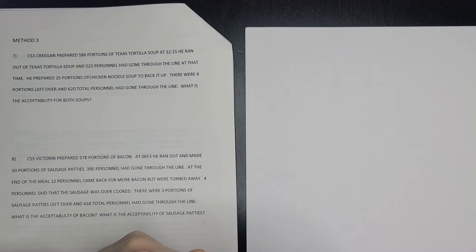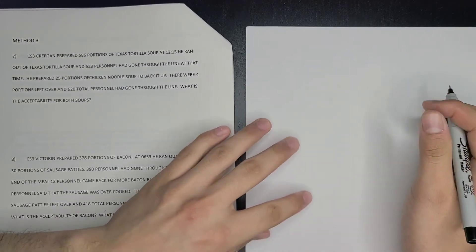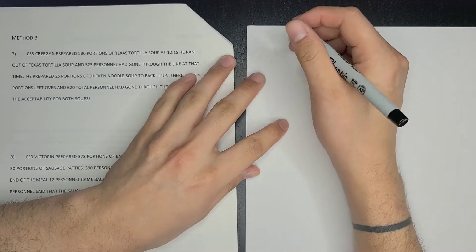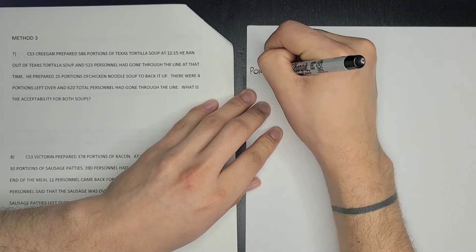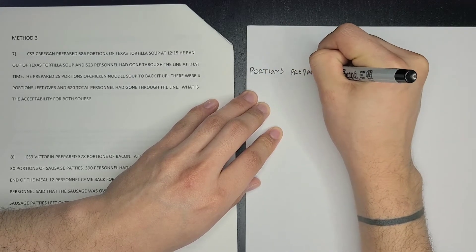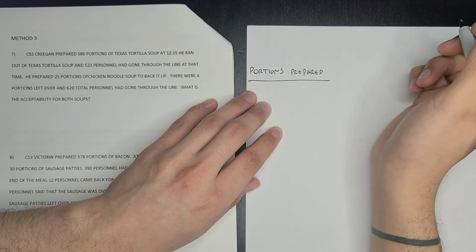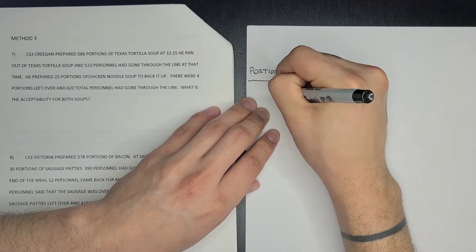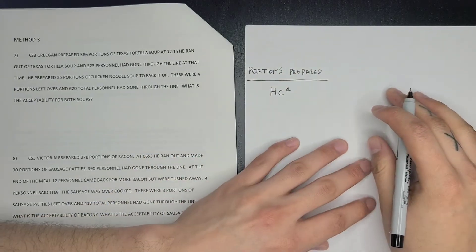This third method has two different parts to it. The first part: you have your portions prepared, divide them by your first head count, so head count number one.